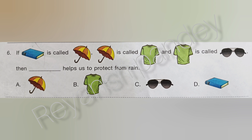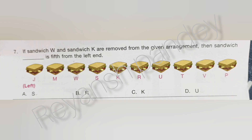If book is umbrella and umbrella is t-shirt, t-shirt is goggles, then what helps us to protect from rain? Next. If the letters W and T are removed from the given arrangement, then which letter is fifth from the left end? The answer is D — U.